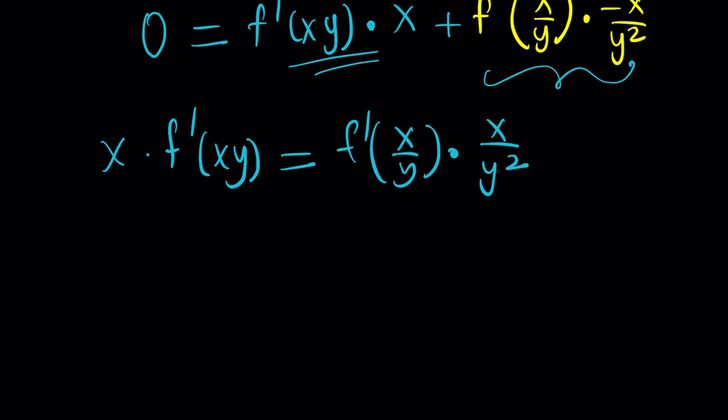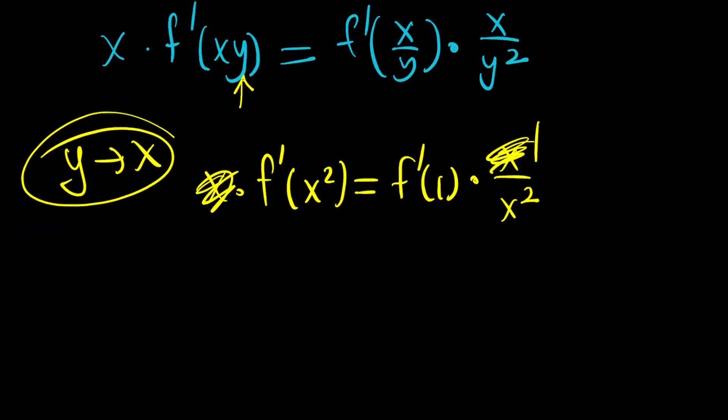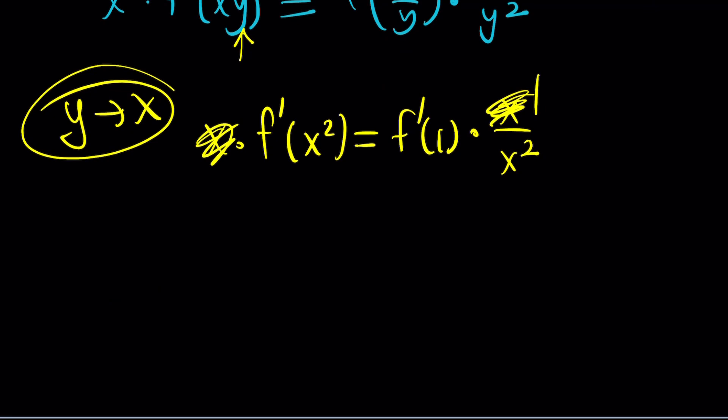So this is my equation. And now I'm going to replace y with x, because that's going to simplify it even further. And we can always do that with functional equations. Let's replace it. That's going to give us x·f'(x²) = f'(x/x)·(x/x²), which is f'(1)·(1/x). But these x's cancel out, leaving us with 1.